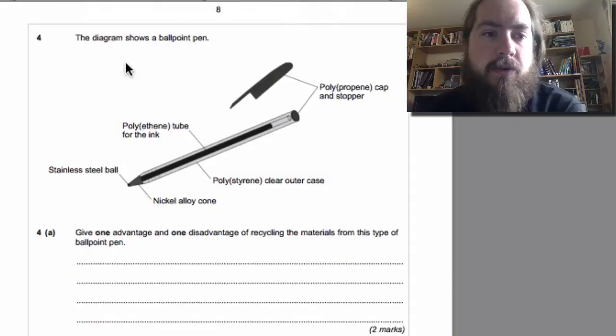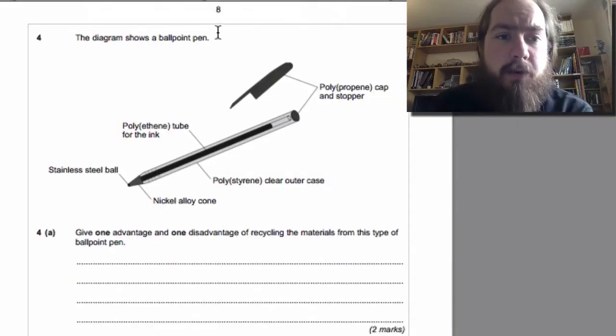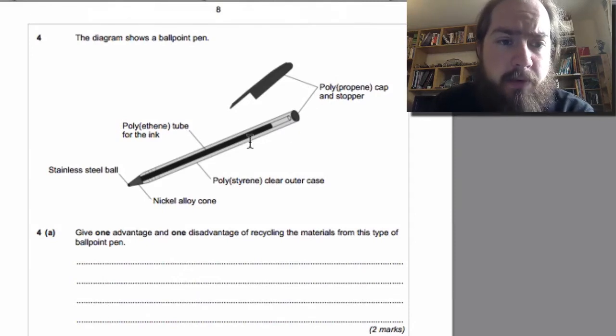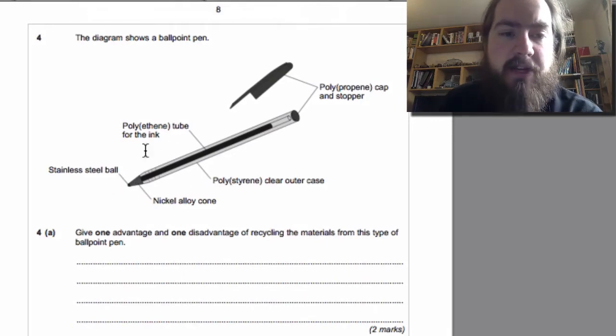Hello and welcome to Mr Morton's science videos. I'm Mr Morton and this week we're looking at GCSE chemistry past paper questions. As always, the paper we're looking at is linked in the description below so you can have a go yourselves. This paper is AQA chemistry unit 1 from June 2013 and we're looking at question 4, which is all about alloys and polymers. The diagram shows a ballpoint pen with a cap, the outer casing, the tube for the ink, the ball, and the cone made out of a nickel alloy.